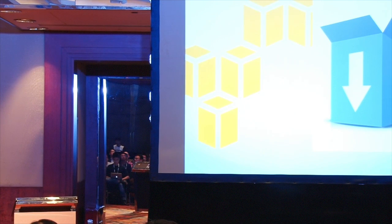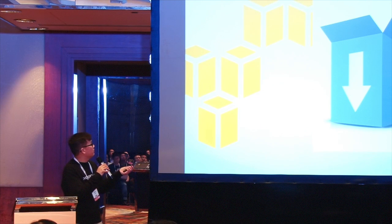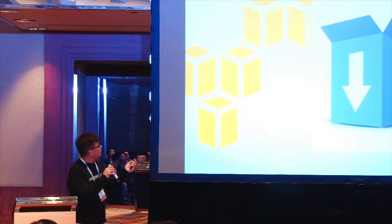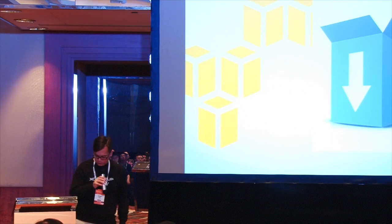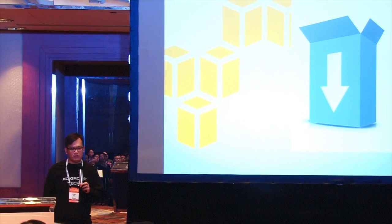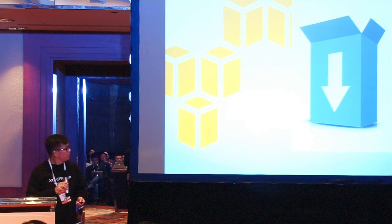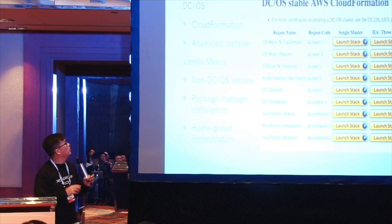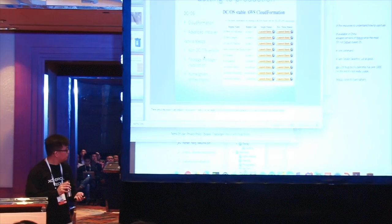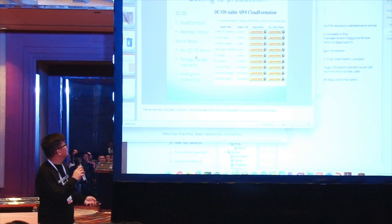The two gap items I'm talking about are: you need a way to provision your infrastructure — in this case we use AWS — and the other item is the software, the software being Mesos.